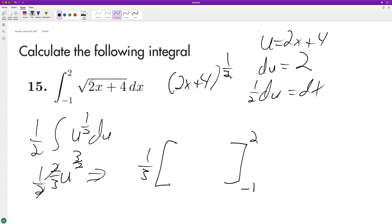So we plug back in our 2x plus 4, and we're going to get 2 root 2 minus square root of 2.